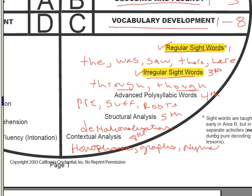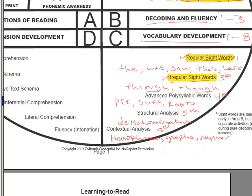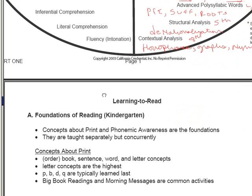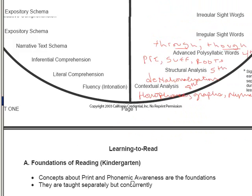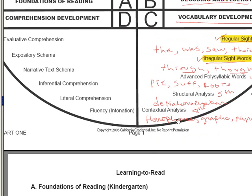But for some words, it's really context that you have to rely upon in order to understand it. Okay, well, let's now go to our notes and start to work in these areas. I'm going to come right back and we'll start with vocabulary development, beginning with advanced polysyllabic words.